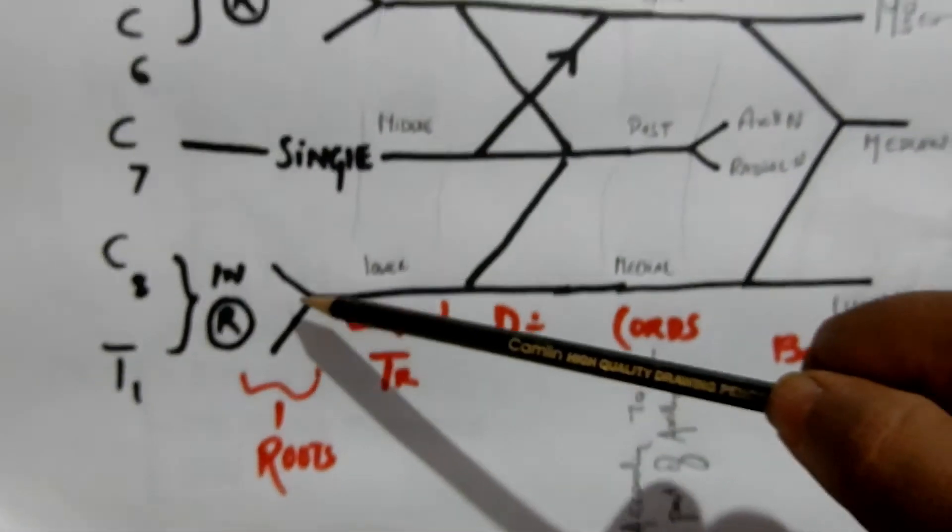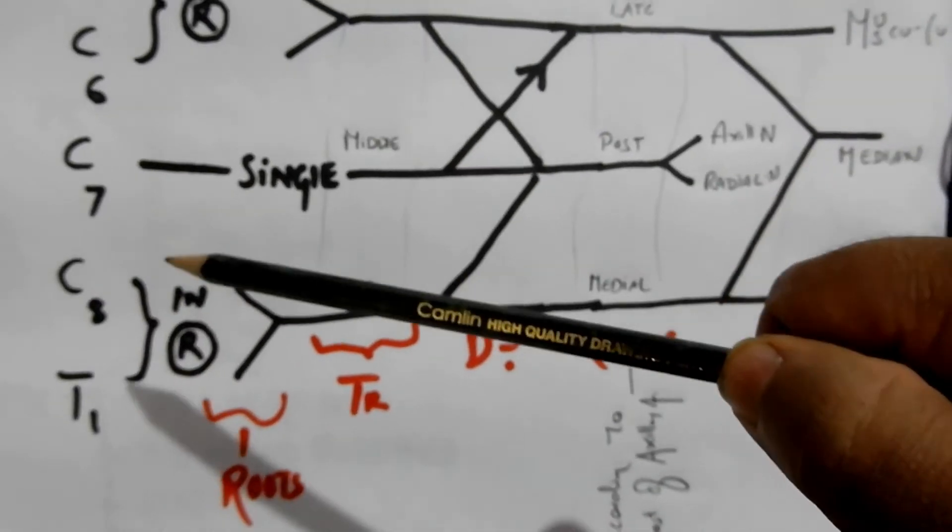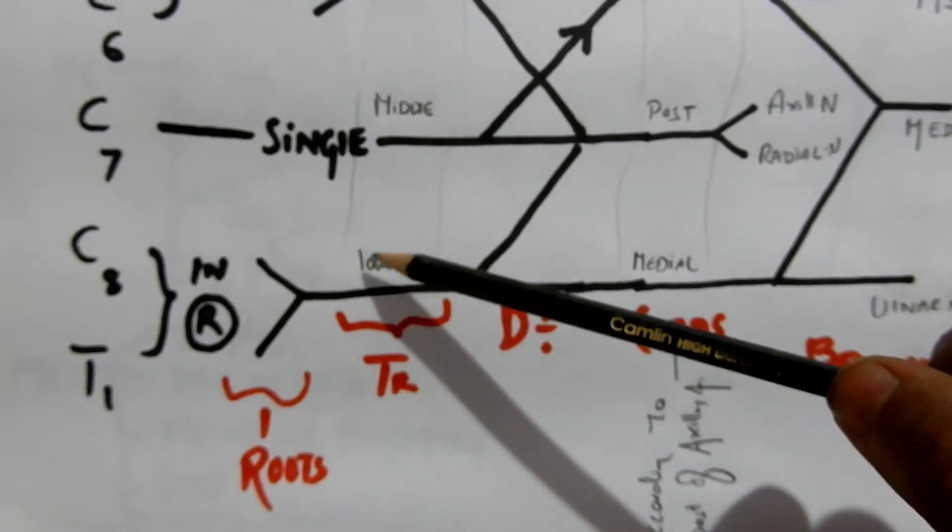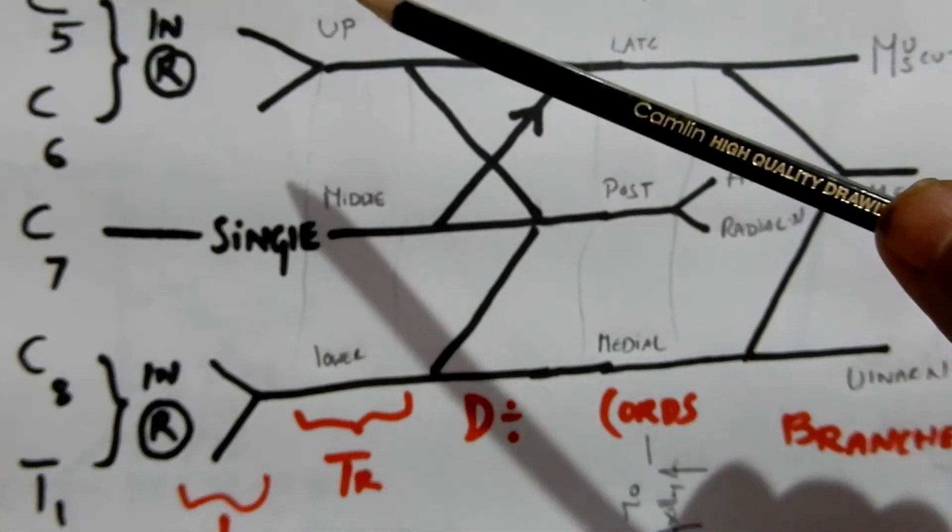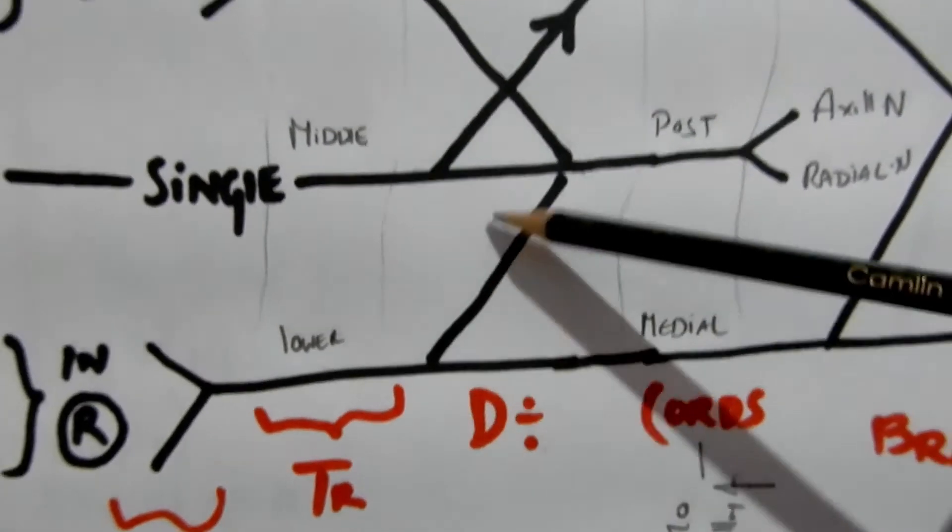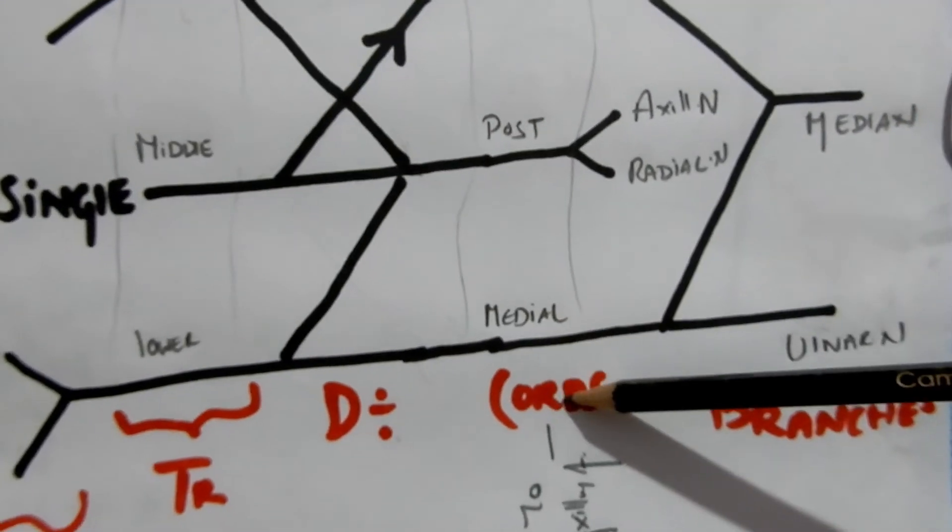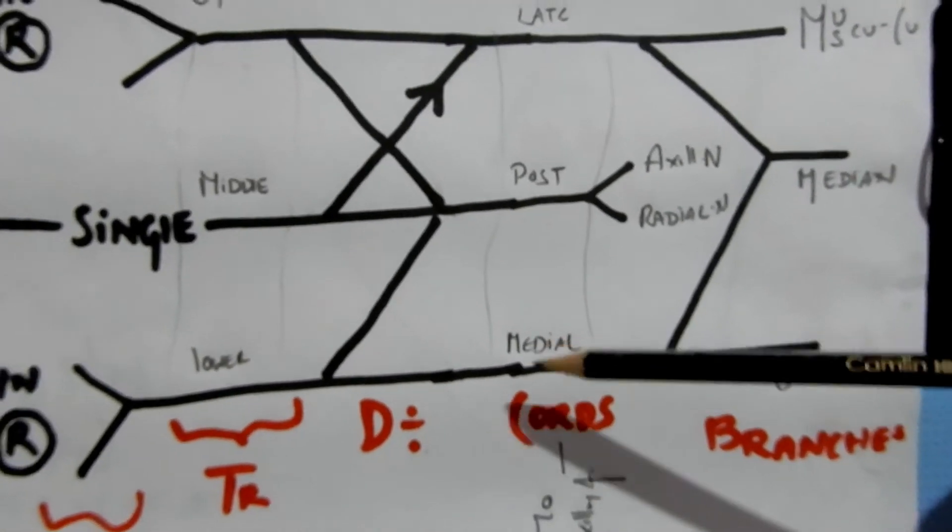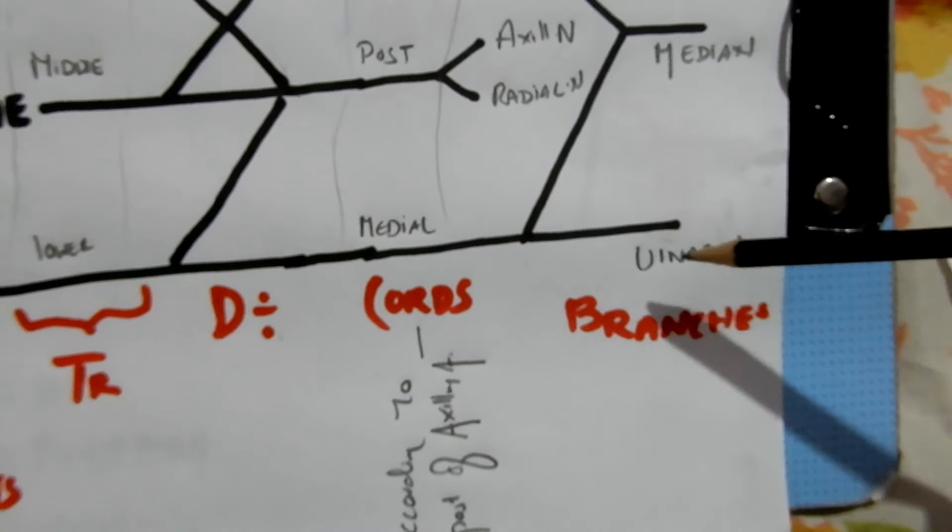The basic thing to understand: the textbook calls them roots - C5, C6, all these are the roots. A tree has roots, trunk, and branches. These upper, middle, and lower are the trunks, the second part. You can see the division marks here - these are the divisions. Then we have cords. Cords are named lateral cord, posterior cord, medial cord. After cords you have branches.